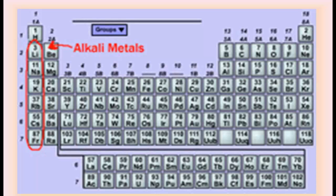Even though hydrogen shares the same electronic configuration as alkali metals, when we discuss alkali metals we never include hydrogen. Why? Because the hydrogen atom is very small in size, many of its properties are different from those of alkali metals. Therefore, while discussing the alkali metals of Group 1, hydrogen is never included.